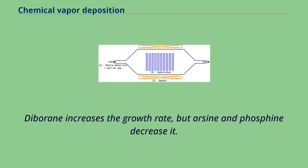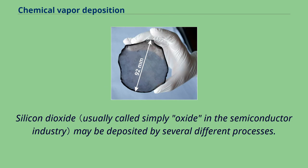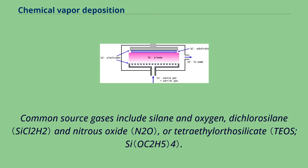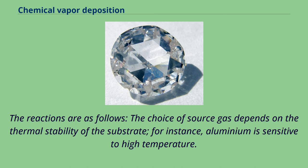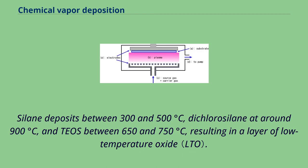Silicon dioxide may be deposited by several different processes. Common source gases include silane and oxygen, dichlorosilane and nitrous oxide, or tetraethyl orthosilicate (TEOS). The choice of source gas depends on the thermal stability of the substrate. For instance, aluminium is sensitive to high temperature. Silane deposits between 300 and 500 degrees Celsius, dichlorosilane at around 900 degrees Celsius, and TEOS between 650 and 750 degrees Celsius, resulting in a layer of low temperature oxide.